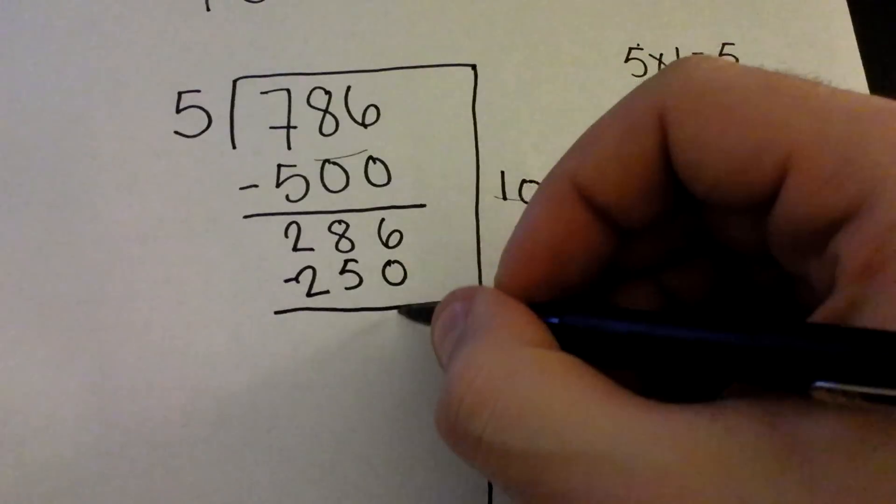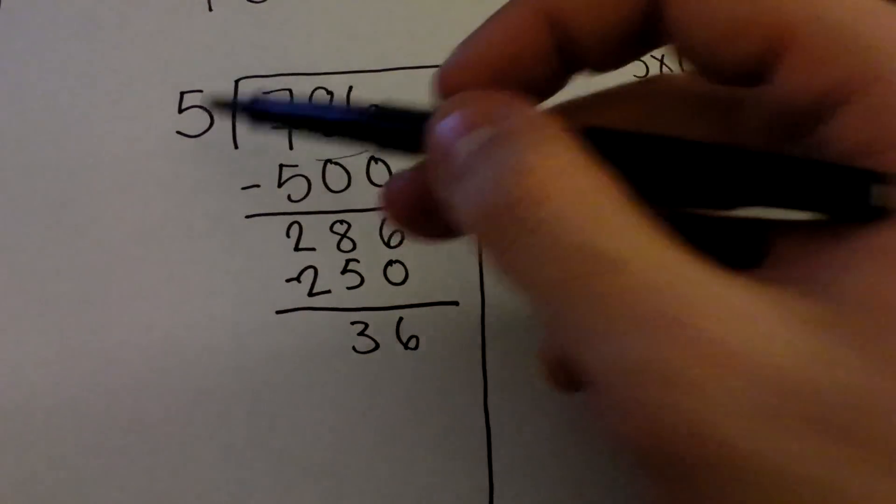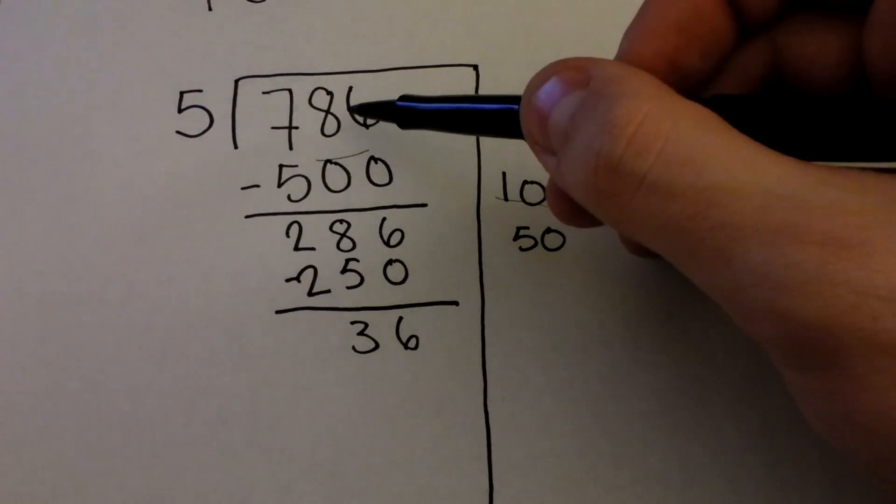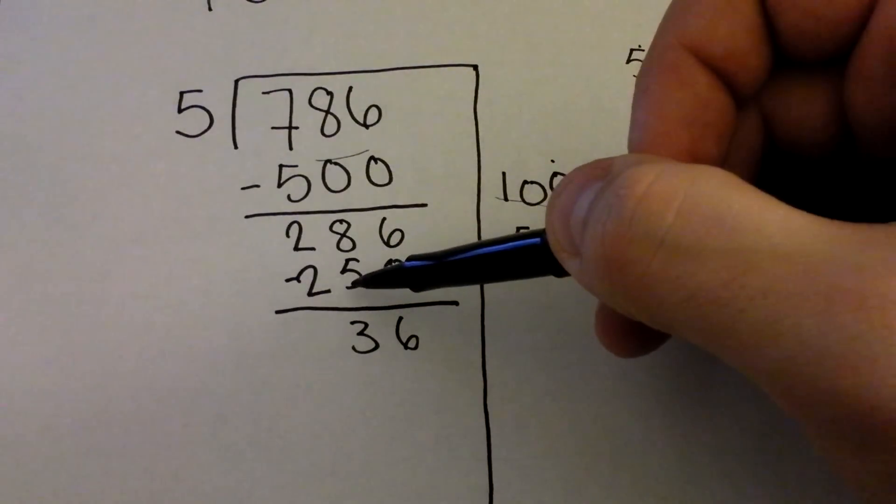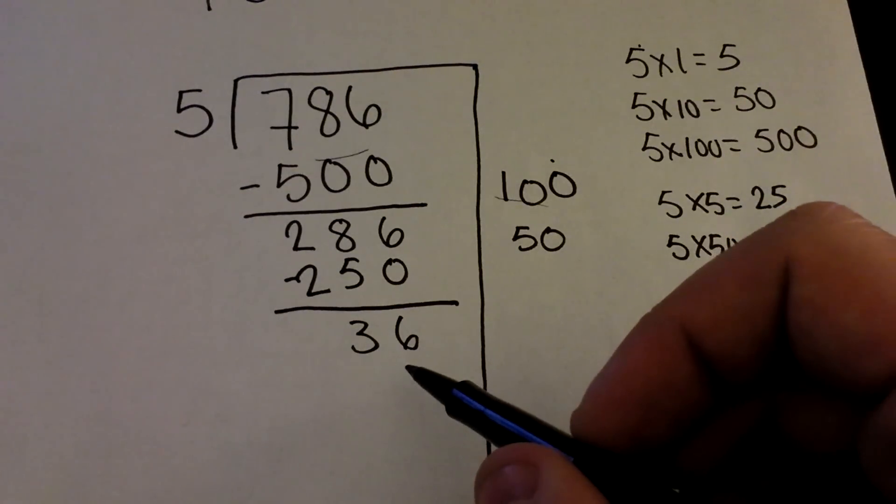When we subtract, we find that we are left with 36 remaining items that we want to separate into groups of 5. We've already taken out 150 groups of 5, which would equal 500 plus 250, 750. And we have 36 more items that we want to take out.